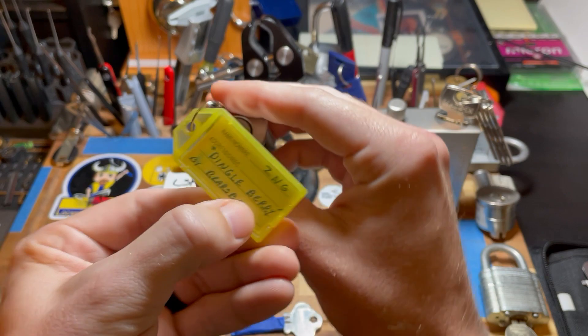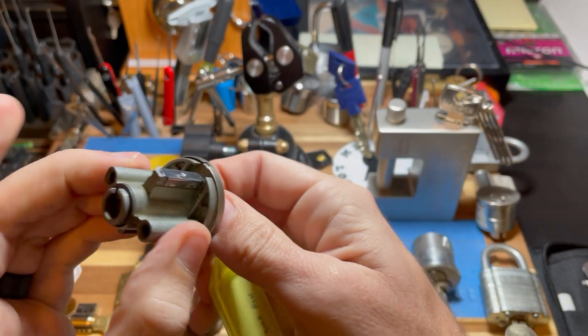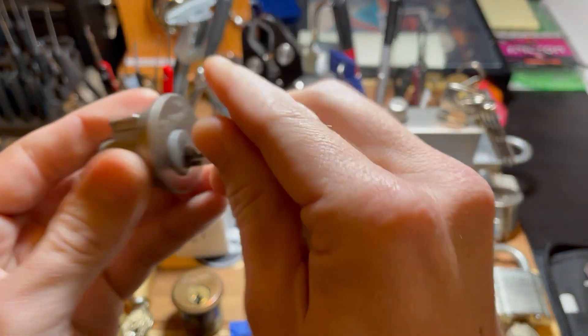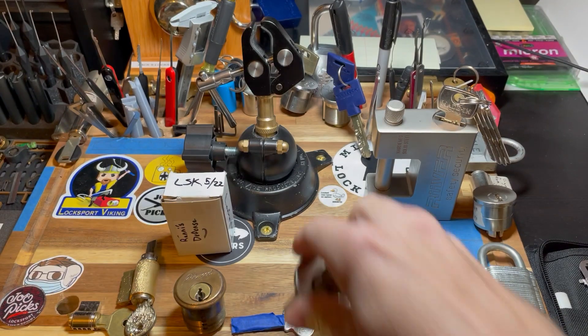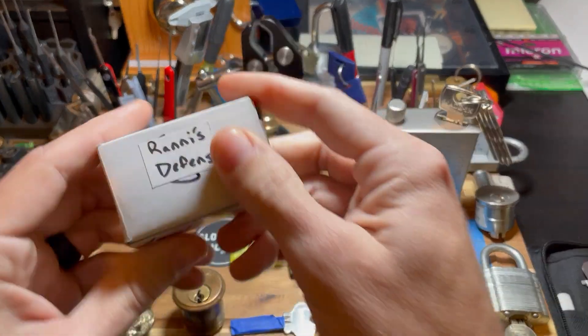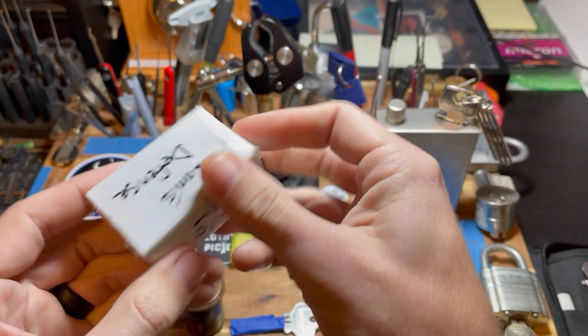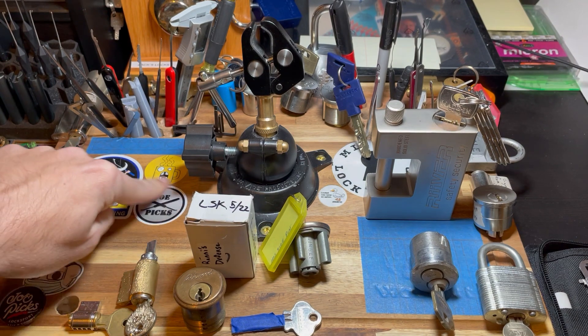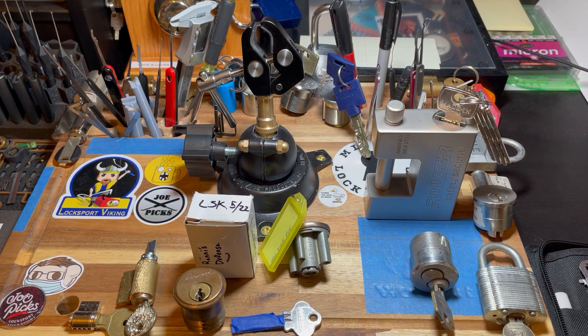We've got Dingleberry by Bears Back. Looks like a Quickset. And some deep cuts in there. And high peak. And then we've got one more, which is Rannis Defense by Lance Spikey. And then I put Joe's sticker right here. I got one of his old ones, so I put that on my picking stand.